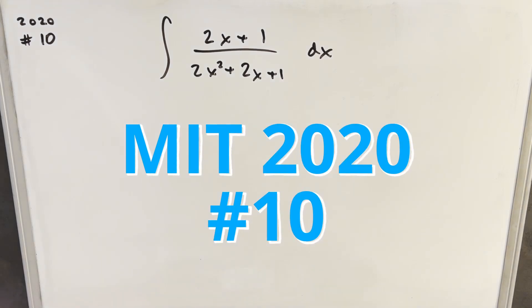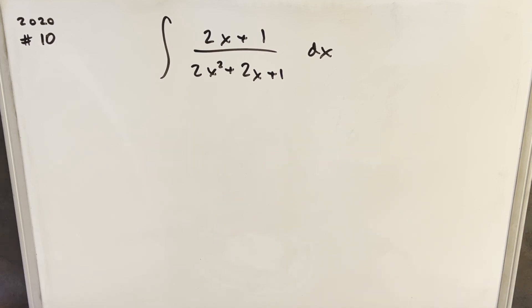Hey, I'm here today with another integral. This one's from MIT 2020, problem number 10. We have the integral of 2x plus 1 over 2x squared plus 2x plus 1 dx.